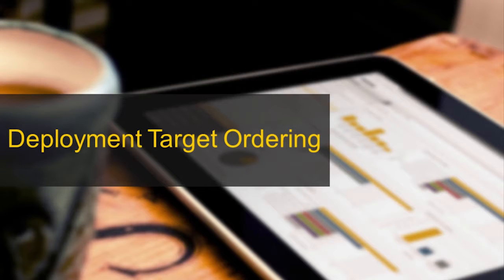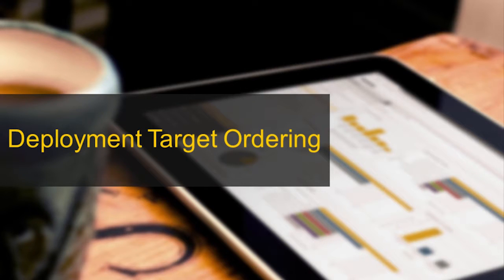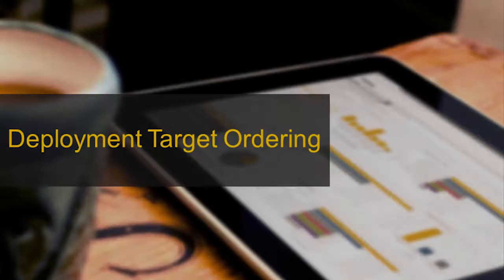Hello and welcome to this Atomic technical video on how you can influence the deployment order of application components to multiple deployment targets within Atomic Release Automation. For example, the deployment order might be important when you have a global deployment and you want to have servers in Europe deployed first before you deploy servers in the US or Asia.